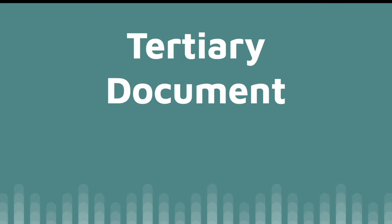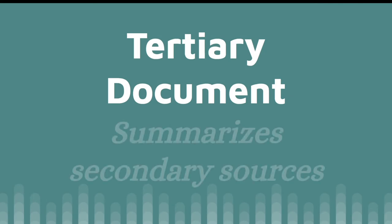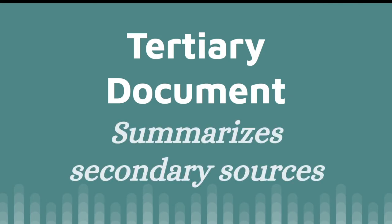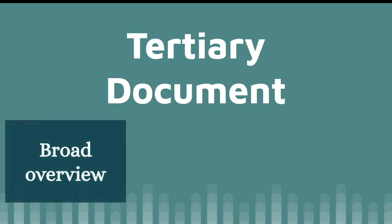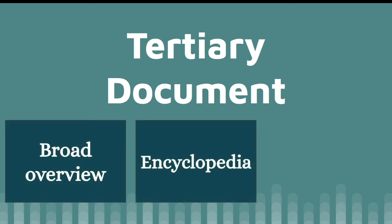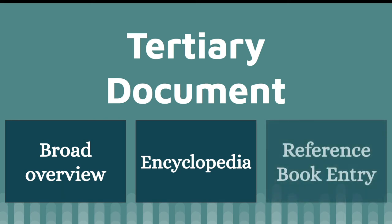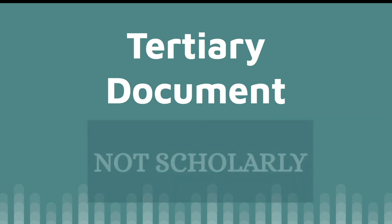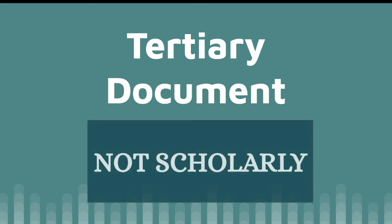A tertiary document is yet another step removed. It summarizes the findings of various secondary sources to provide a general overview of how that original text is viewed. These consist of encyclopedia and reference book entries — a short summary of the document and its context. Tertiary sources are usually considered reliable, but are never considered scholarly, because they don't have the depth of detail we need for that qualification.